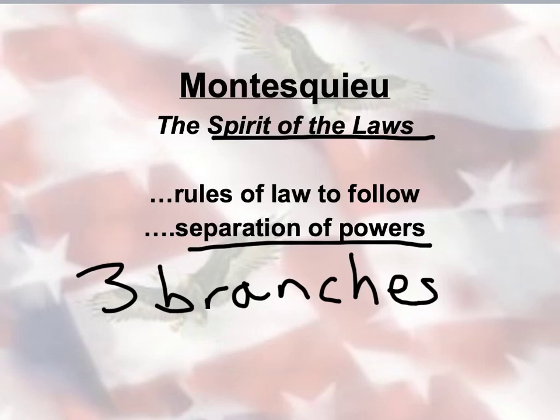So there you have it — we've talked about some of the influences on the Constitution, especially from Rome, Britain, and the Enlightenment. In the next section, we are going to talk about how the Constitution is going to be ratified, and there are going to be some states that aren't too happy with it because they're going to demand a Bill of Rights.